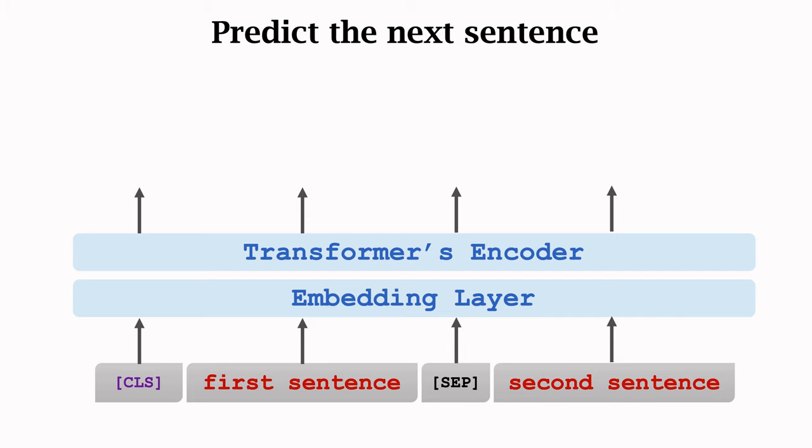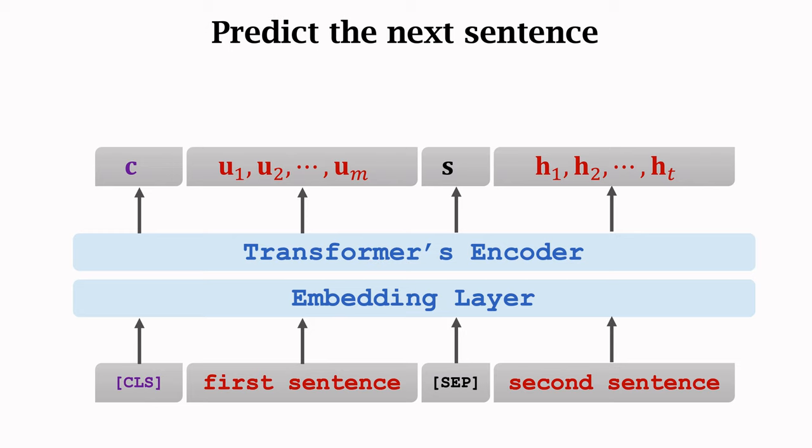The output is a sequence of vectors. Each vector is in the position of an input token, such as a word, CLS, or SEP. For example, vector um is in the position of the last word of the first sentence. Another example: vector C is in the position of the token CLS. Vector C will be used for binary classification, that is to tell if the second sentence is the real next sentence.